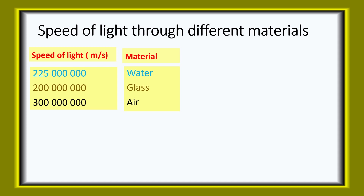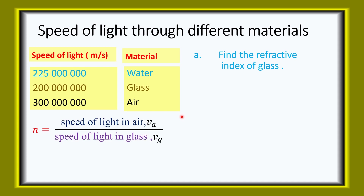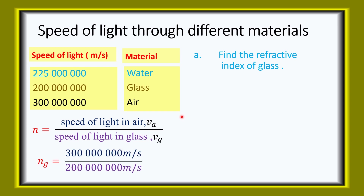We have three materials: water, glass, and air. The speed of light in water is 225 million meters per second. The speed of light in glass is 200 million meters per second, while the speed of light in air is 300 million meters per second. Find the refractive index of glass: speed of light in air over speed of light in glass — that is 300 million divided by 200 million, giving 1.5.